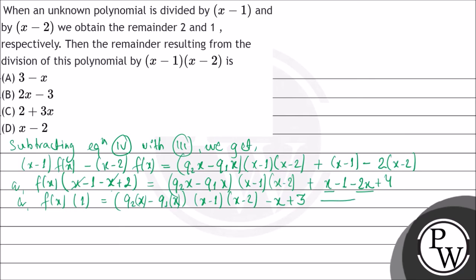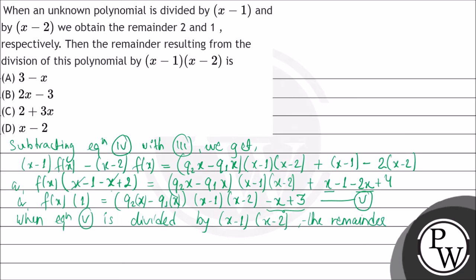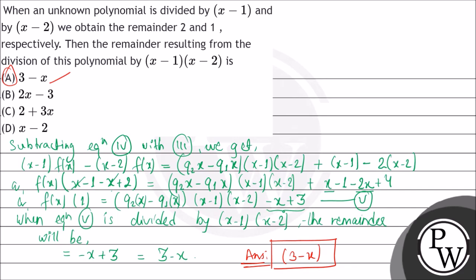So when f of x is divided by (x minus 1)(x minus 2), the remainder term will be minus x plus 3. When the equation is divided by x minus 1 and x minus 2, the remainder will be equal to minus x plus 3, or we can write this as 3 minus x. So our required answer is 3 minus x, which is option A. Hope you understood it well — best of luck!